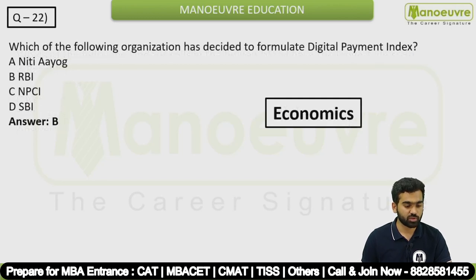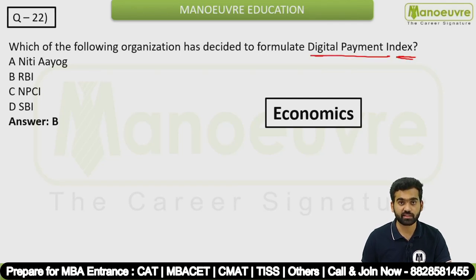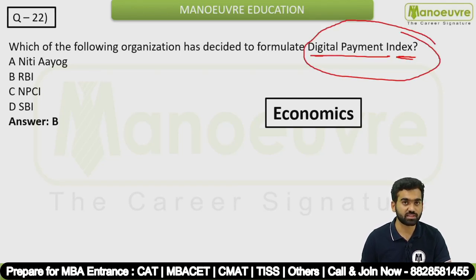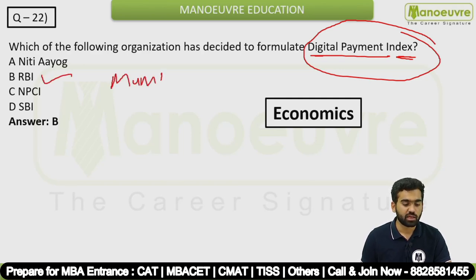Question 22: Which organization has decided to formulate a Digital Payment Index? The answer is RBI — Reserve Bank of India. RBI's headquarters is in Mumbai and its governor is Shaktikanta Das.